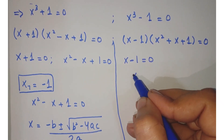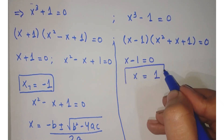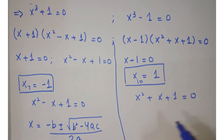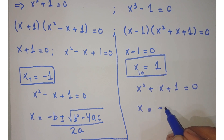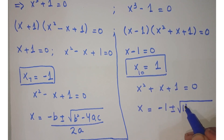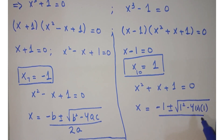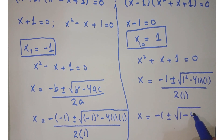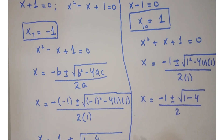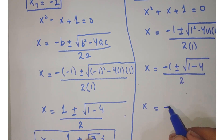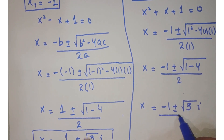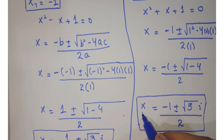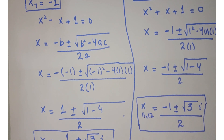For x cubed minus 1 equals 0, we have x minus 1 equals 0, giving x equals 1, which is the 10th value of x. Now working on x squared plus x plus 1 equals 0 and applying the quadratic formula, we get x equals minus 1 plus or minus under root of 1 minus 4, upon 2, giving x equals minus 1 plus or minus root 3 i upon 2. These are the 11th and 12th solutions of x. So we have calculated all 12 solutions of x.